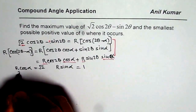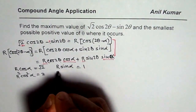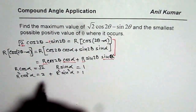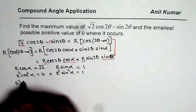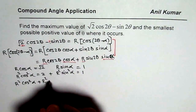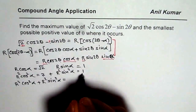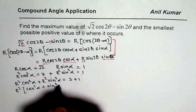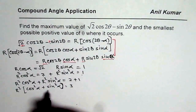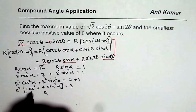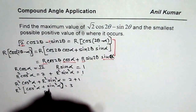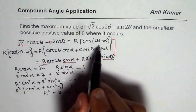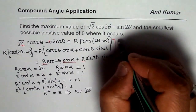Now let us square both equations. We get r²·cos²(α) = 2 and r²·sin²(α) = 1. Adding them up, we get r²·cos²(α) + r²·sin²(α) = 2 + 1 = 3. Taking r² as a common factor, we get r²·(cos²α + sin²α) = 3. Since cos²α + sin²α = 1, we get r² = 3, so r = √3. We always take r as a positive number.